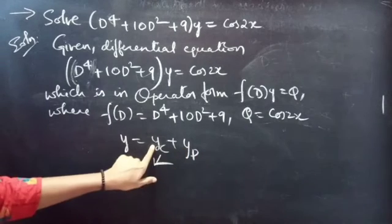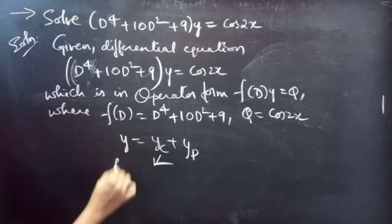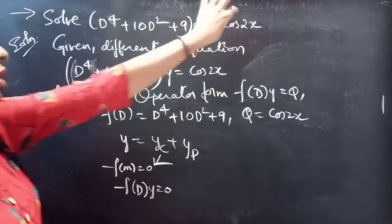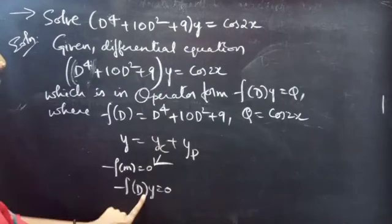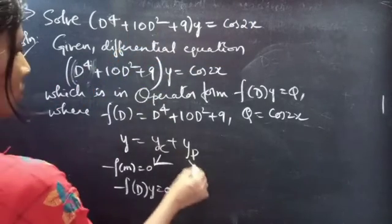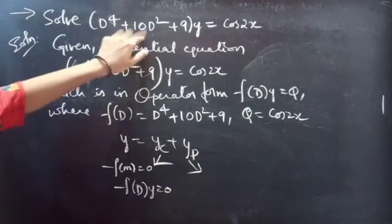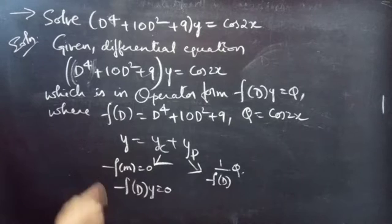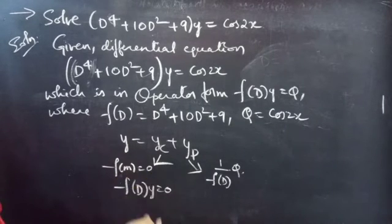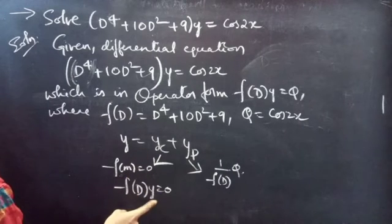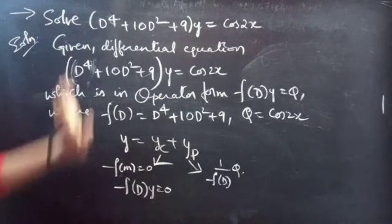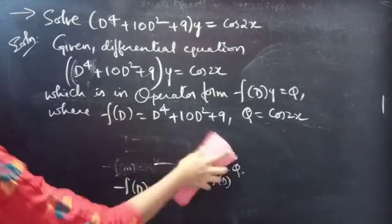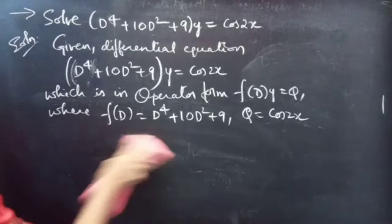We will find yc, the complementary function, and yp, the particular integral. We will find yc using the auxiliary equation of the homogeneous equation corresponding to the given non-homogeneous equation — simply take Q equal to 0. We will find yp using (1/f(D))·Q.